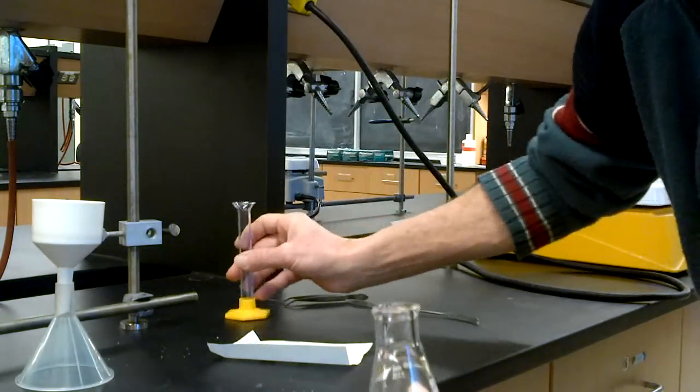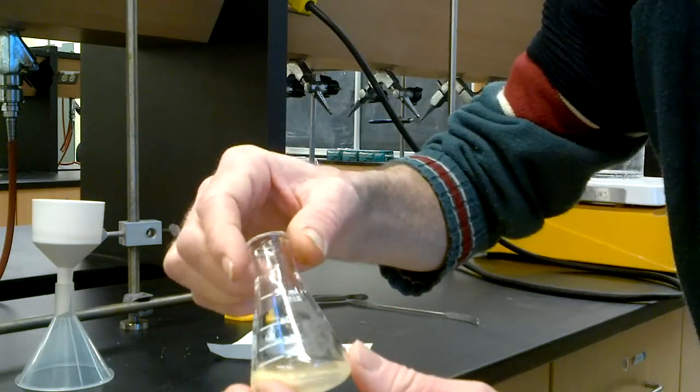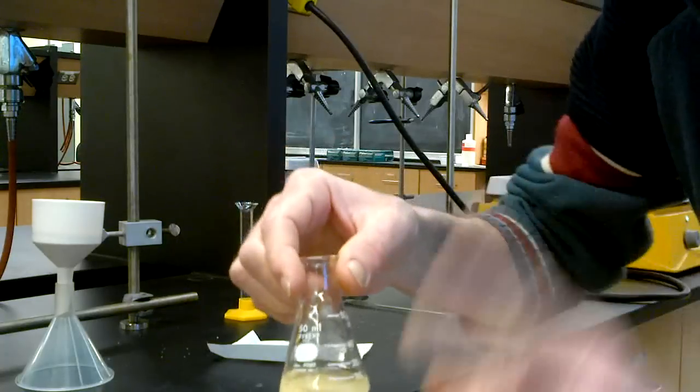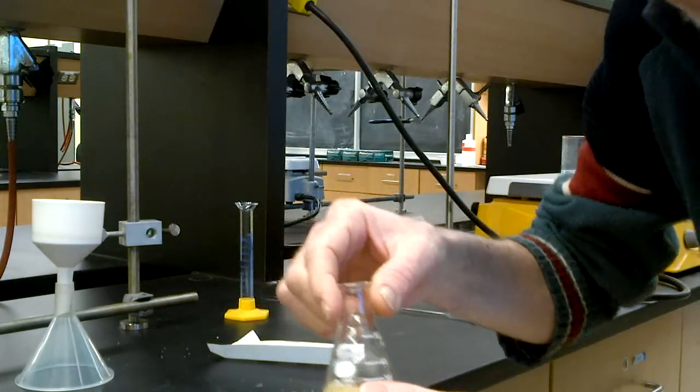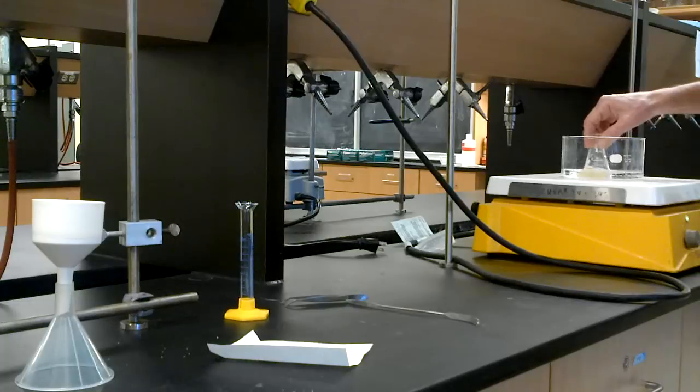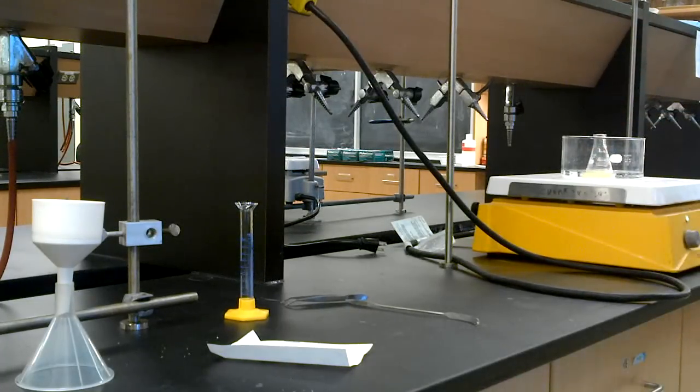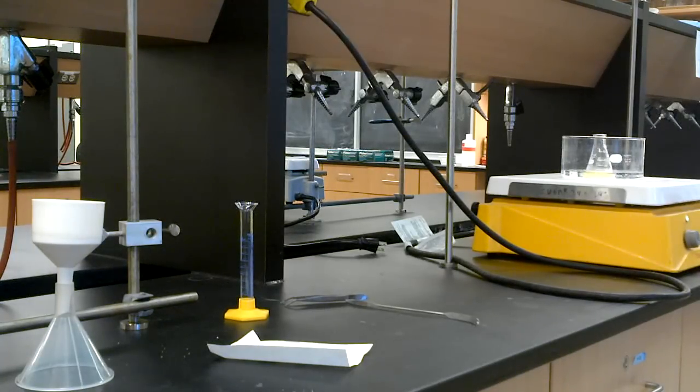Whenever you heat a flammable solvent, particularly when the boiling point is less than the boiling point of water, you use a water bath. That way, you're less likely to have a fire. So here we go, into the hot water bath. That will just take a minute, and hopefully will dissolve. Otherwise, we'll have to add some more solvent.